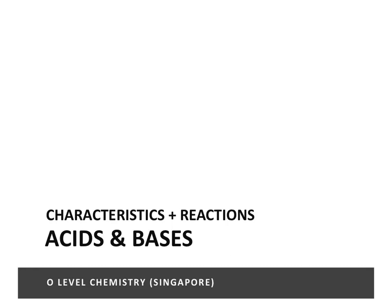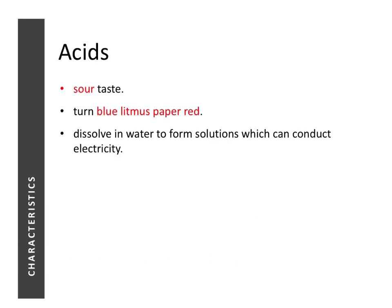In this lesson we're going to learn about the characteristics and typical reactions that acids and alkalis can undergo. Acids are known to have a sour taste. One acid we've learned in the previous lesson is ethanoic acid, which is vinegar — most of you would have tried vinegar before. Acids are also known to turn blue litmus paper red.